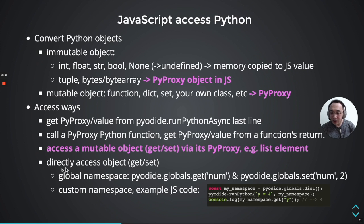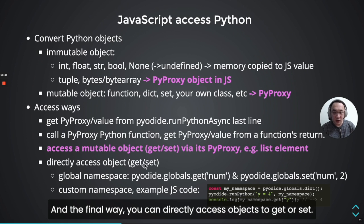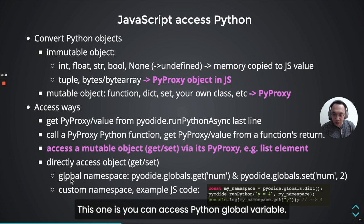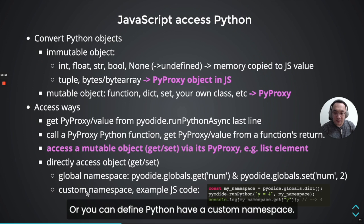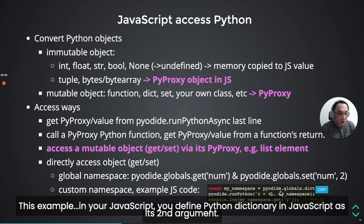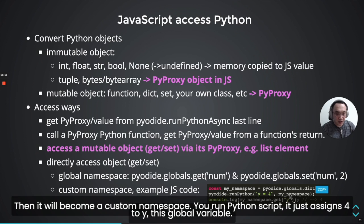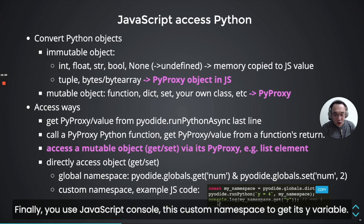Finally, you can directly access objects to get or set global variables. For example, you can get or set a global variable via pyodide.globals. Or you can define a constant namespace: in JavaScript, you define a Python dictionary as a second argument, which becomes a constant namespace. You run Python's query, defining for example 'x = 4; y = 1', making y a global variable. Then use JavaScript console.log with the constant namespace to get the value of y.